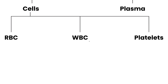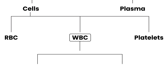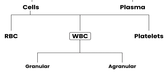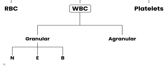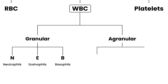The white blood cells are really what we're concerned with. There are two main types: granular and agranular. The granular ones are the ones we're interested in — there's neutrophils, eosinophils, and basophils. The agranular section involves two types: monocytes and lymphocytes.